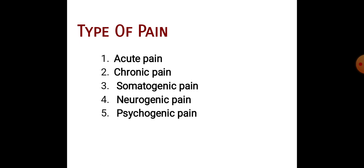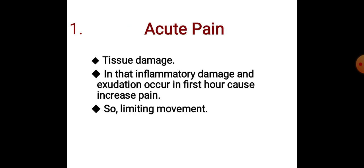Types of Pain: There are 5 types of pain. 1. Acute pain, 2. Chronic pain, 3. Somatogenic pain, 4. Neurogenic pain, 5. Psychogenic pain. Let's go into detail.